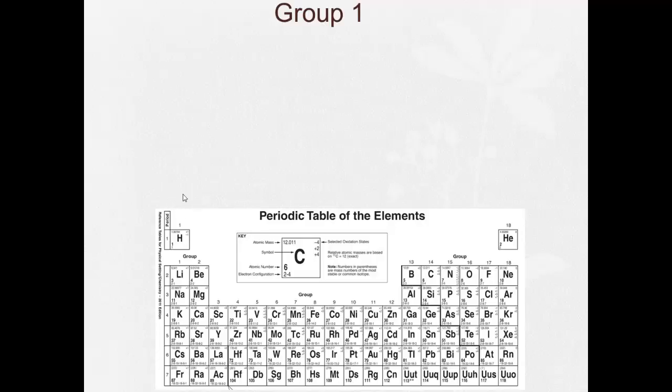So the first one we're going to look at is group 1. And group 1 are called the alkali metals. You have to know the name. Now, these are very reactive. They tend to be the most active metals.